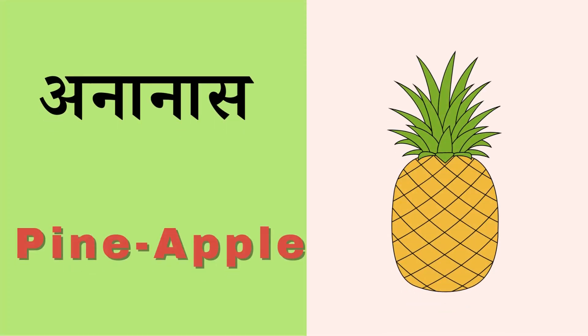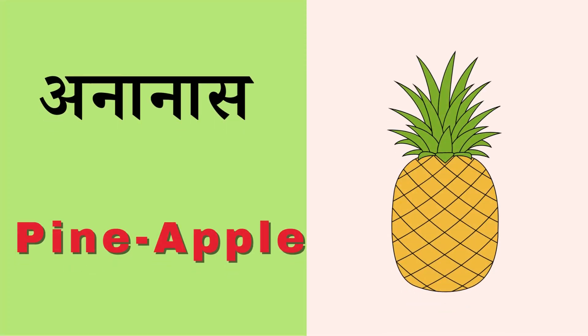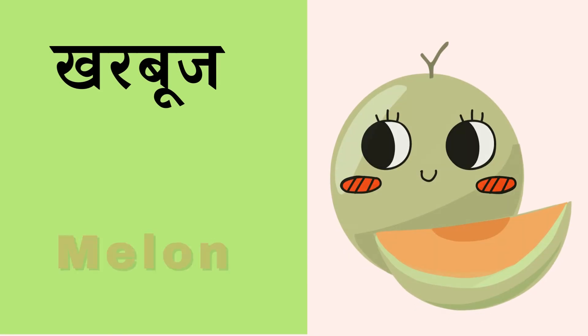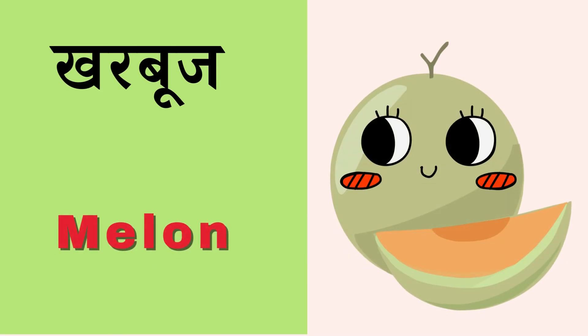Anana means Pineapple, P-I-N-E-A-P-P-L-E, Pineapple. Kharbuj means Melon, M-E-L-O-N, Melon.